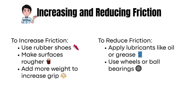Depending on the situation, we may need to increase or reduce friction. To increase friction: use rubber shoes, make surfaces rougher, add more weight to increase grip. To reduce friction: apply lubricants like oil or grease, use wheels or ball bearings, or polish and streamline surfaces. So the next time you oil your bike chain, you're actually reducing friction.